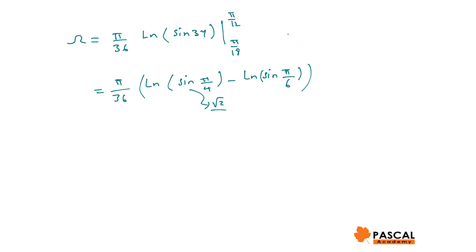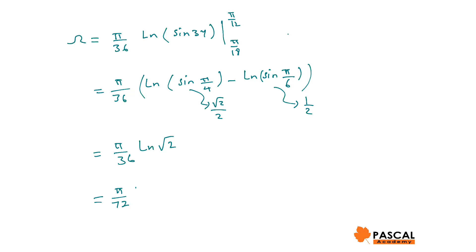Since sin(pi/4) = sqrt(2)/2 and sin(pi/6) = 1/2, we get ln(sqrt(2)/2 divided by 1/2) = ln(sqrt(2)). Therefore, omega equals (pi/36) times ln(sqrt(2)), which equals pi over 72 times ln(2).